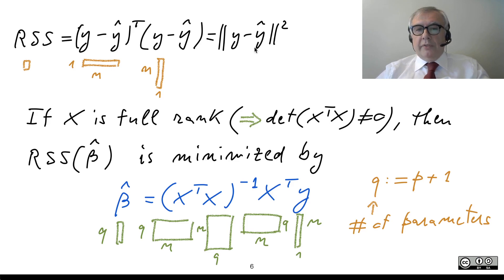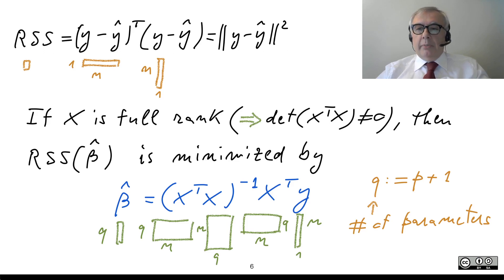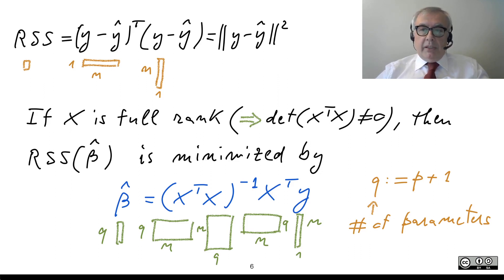You have to compute the gradient of this cost function with respect to vector beta, then zero the gradient. By zeroing the gradient, you obtain a system of linear equations called the normal equations. By solving them, you get the solution. But for the solution to be unique, you need an identifiability condition: the regressor matrix X must be full rank.